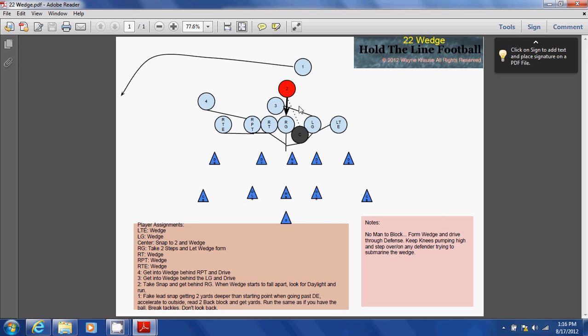The back with the ball is right in behind the point of that V, and then you have backs on either side of him helping to basically hide him while your one back runs an 18 sweep fake to the side. And then that wedge is just driving forward right through the defense.